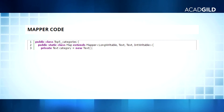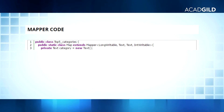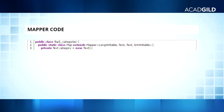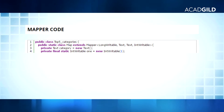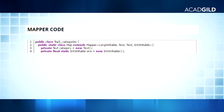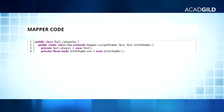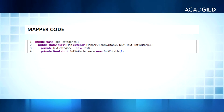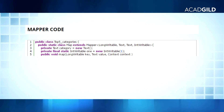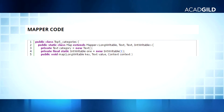In line 3, we are declaring a private Text variable called category which will store the category of videos on YouTube. In line 4, we are declaring a private final static IntWritable variable with value 1, which will be constant for every value. In line 5, we are overriding the map method that will run one time for every line.